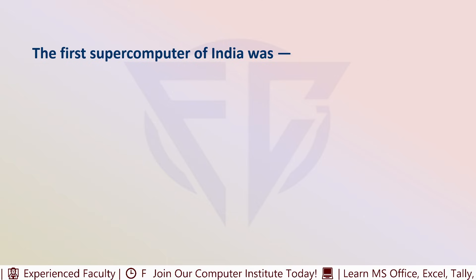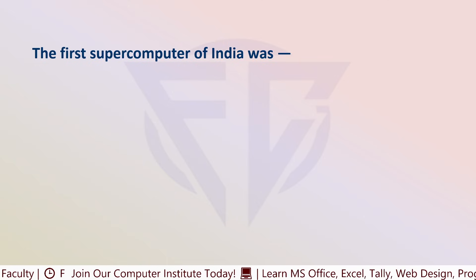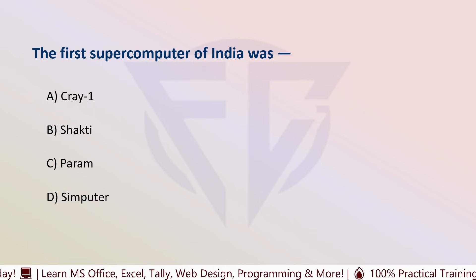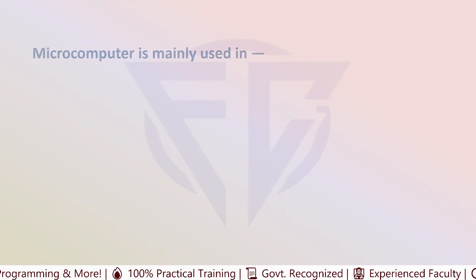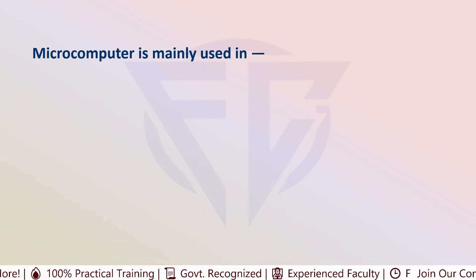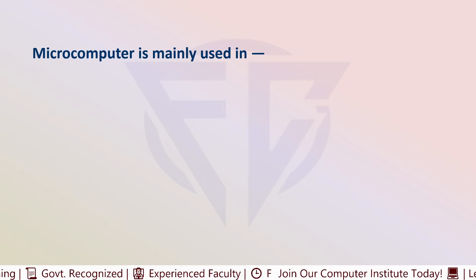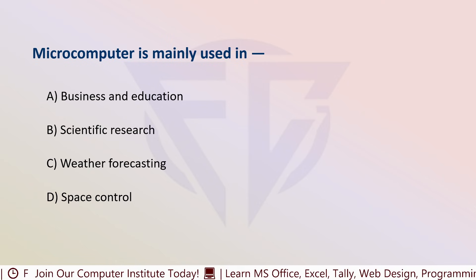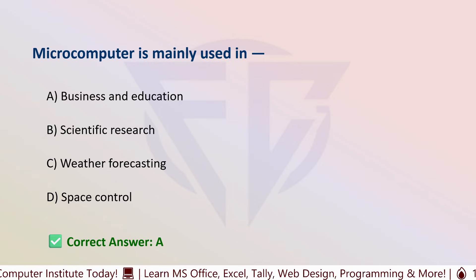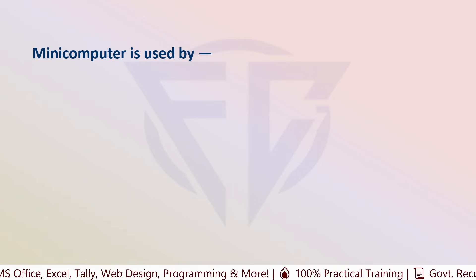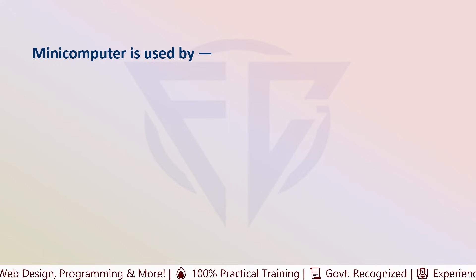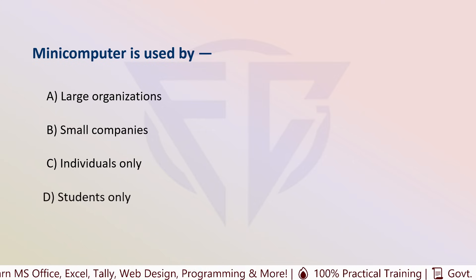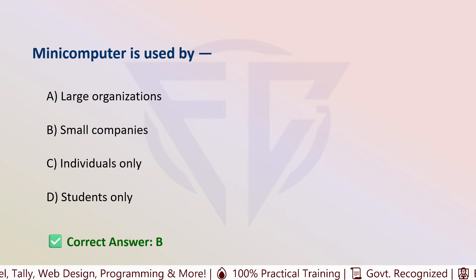The next question is: the first supercomputer of India was — options are: A) Cray-1, B) Shakti, C) PARAM, and D) Simpouter. The correct answer is C, that is PARAM. The next question: micro computer is mainly used in — options are: A) Businesses and education, B) Scientific research, C) Weather forecasting, and D) Space control. The correct answer is A, business and education. The next question: mini computer is used by — options are: A) Large organizations, B) Small companies, C) Individual only, and D) Students only. The correct answer is B, that is small companies.